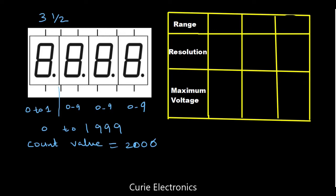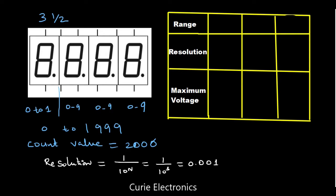But what remains the same here is the resolution — the resolution is going to be the same. Because for resolution, we are considering only the number of full digit displays. So 1 upon 10 to the power n equals 1 upon 10 to the power 3, which comes to 0.001. The resolution is the minimum value the display can show — that is the displayable value, not the measurable value.